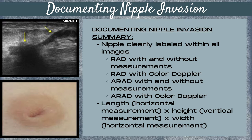It doesn't matter which dimension you take your measurements in — you just want to ensure that you have three dimensions in total: your length, which is a horizontal measurement; your height, which is a vertical measurement; and your width, which is a horizontal measurement. When measuring the mass, any angular or lobulated margins should be included in the measurement, and if there's a thick echogenic halo present, that should also be included.